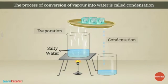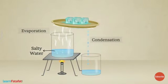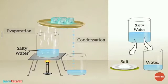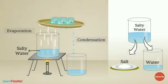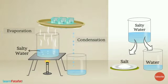The process of conversion of vapour into liquid is known as condensation. Here you can see both processes: in the first one, the salty water has been separated — the salt has been separated from water by the process of evaporation. On the other hand, the vapour coming out from the salty water has been collected in another beaker by the process of condensation. To make it easier, because the vapours are very hot, we needed to cool them quickly.